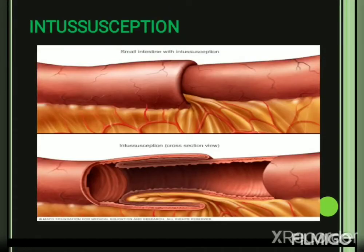This picture gives us a clear view of intussusception, where a part of the small intestine is getting telescoped into the distal part. Even the cross-section view of the telescoped part is clearly visible here.